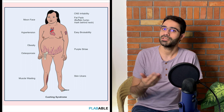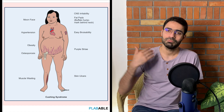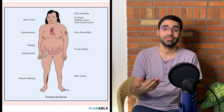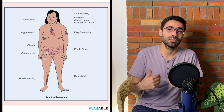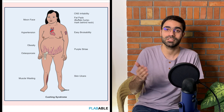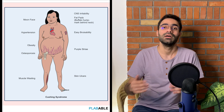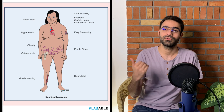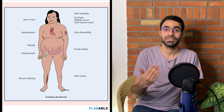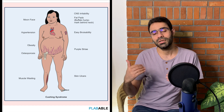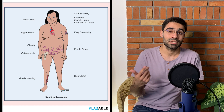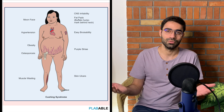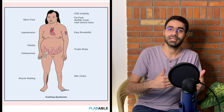A patient of Cushing's typically presents with moon face due to facial fullness, supraclavicular filling, buffalo hump, and truncal obesity due to redistribution of fat caused by cortisol. The patient also has purple striae on the abdomen resulting from skin atrophy and stretching. Additionally, hypertension occurs due to cortisol's vasoconstrictive effect on blood vessels, cortisol increases osteoclastic activity leading to osteoporosis, and the patient can have psychological symptoms like CNS irritability or depressed mood.